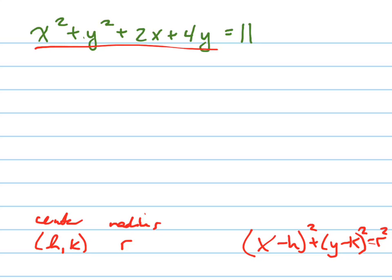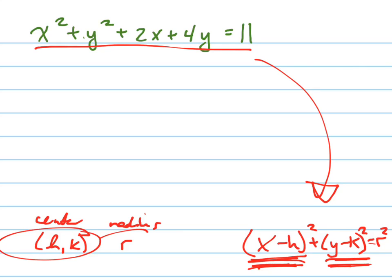So in order to put this equation in this form right here, I'm going to have to, it's called completing the square twice. I need to complete the square on the X terms and then complete the square on the Y terms. And then I'll be able to know what my center is and my radius. So I'll do that right now real quick.